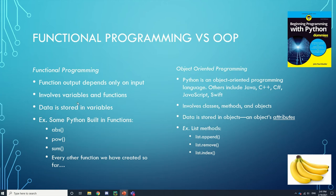Instead of variables and functions, we have what we call a class, which is kind of like a blueprint. Inside the class, there are methods, which are similar to functions but specific to the class. Objects are instances of classes.